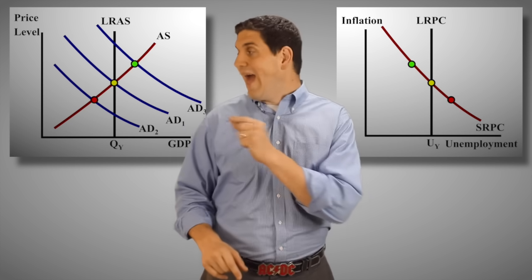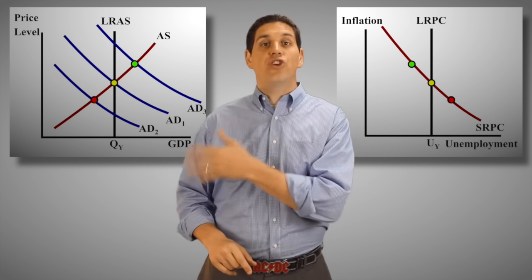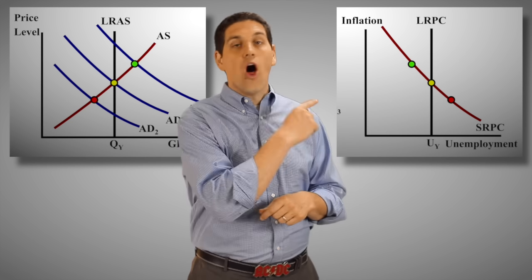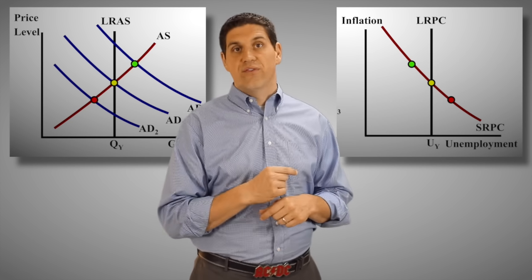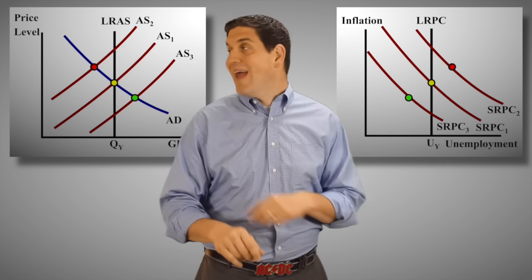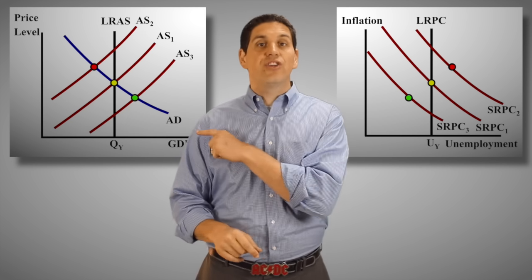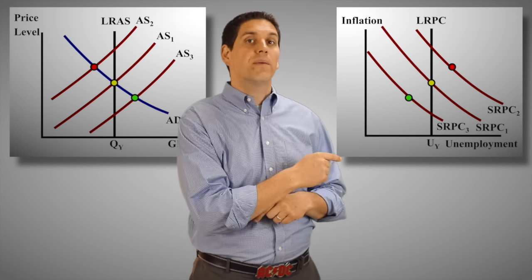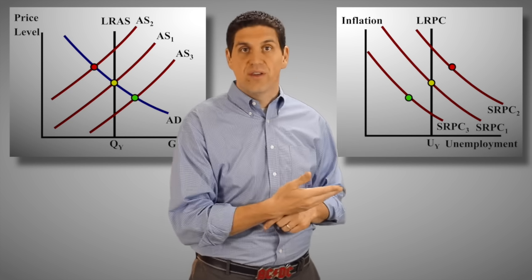So here's the rule: when aggregate demand shifts, there'll be movement along the Phillips Curve. But when aggregate supply shifts, the entire short-run Phillips Curve will shift.